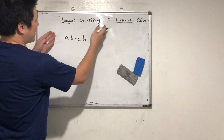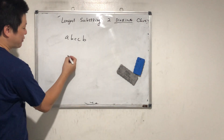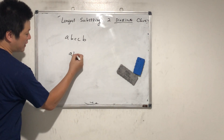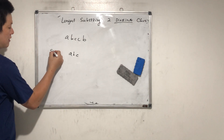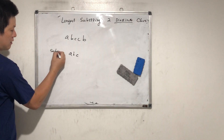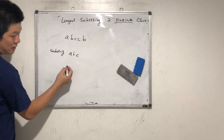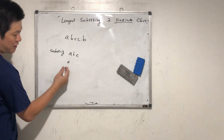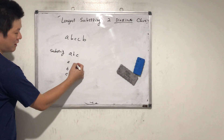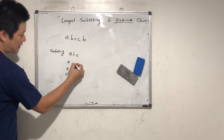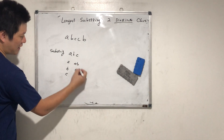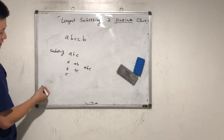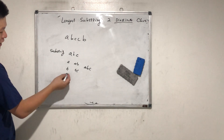So the longest substring — what's a substring? A, B, C — how many substrings? One, six. That was quick. A, B, C — for one-character substrings: A, B, C. Then AB, BC, and ABC. So that's five... oh, six.